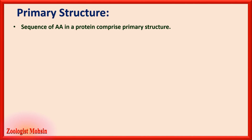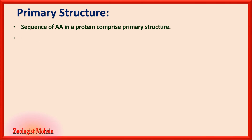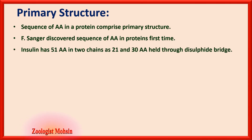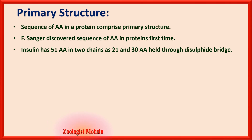Primary structure of proteins: the sequence of amino acids in a protein comprises the primary structure — the simple linear sequence of amino acids. F. Sanger discovered the sequence of amino acids in proteins for the first time. Insulin has 51 amino acids in two chains of 21 and 30 amino acids, held together through a disulfide bridge — this word is very important to remember.